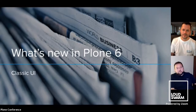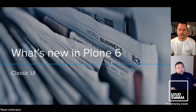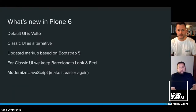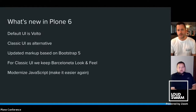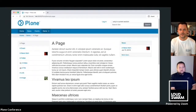So what's new in Plone 6? We have the new default UI, which is Volto. But the Classic UI will stay as an alternative for at least another five years. We updated the markup based on Bootstrap 5. We also updated the Barceloneta theme, which got a more modernized look and feel. And finally, we modernized our JavaScript stack to make it easier. This is the new Barceloneta theme — the modernized look based on Bootstrap 5.